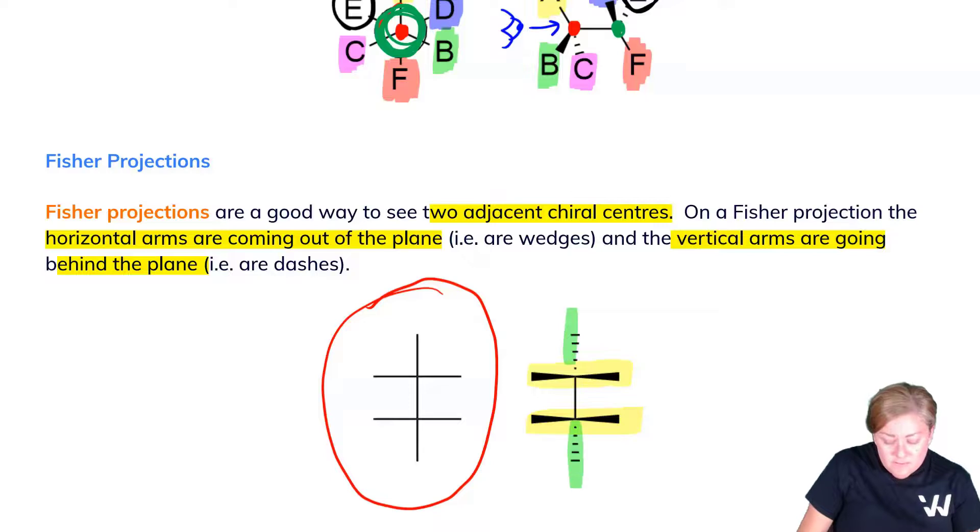It is a convention of the field that you understand that the arms are coming forward and that the top and bottom are going behind. Fischer projections will be really important as we move later on in the course as we start to talk about biomolecules and carbohydrates specifically. Wedge-dash formula, Newman projections, and Fischer projections are all fair game for understanding molecules in three-dimensional space.